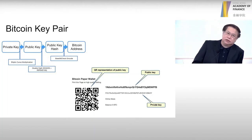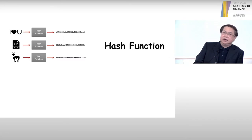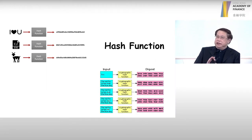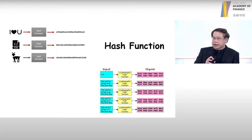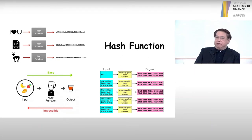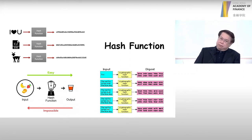The hash function: you can input anything to it and it will always generate a constant-length string. A key characteristic is that a small change in the data will produce a totally different result. For example, in the demonstration here, strings with only one character difference produce totally different hash results — we call this the digest. Another characteristic is that it's one-way: from the input you can produce the output, but from the hash value output it is computationally not possible to generate the input. That means from the receiving address, you cannot generate back the public key.